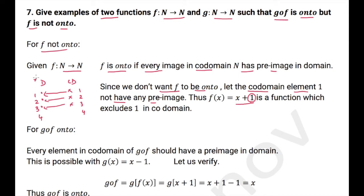Now, this is x and this is x plus 1. For x equal to 1, I have 2 here, f of x equal to 2. For x equal to 2, f of x equal to 3. For x equal to 3, f of x equal to 4. For x equal to 4, f of x equal to 5. So all the elements except 1 will have a pre-image and hence this function f is not onto.